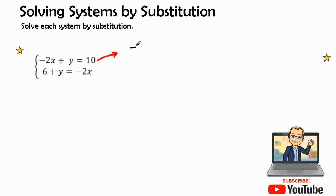So we can write negative 2x plus y is equal to 10. Now, all I would have to do is move over that negative 2x onto the right side of the equal sign, and I have y by itself.